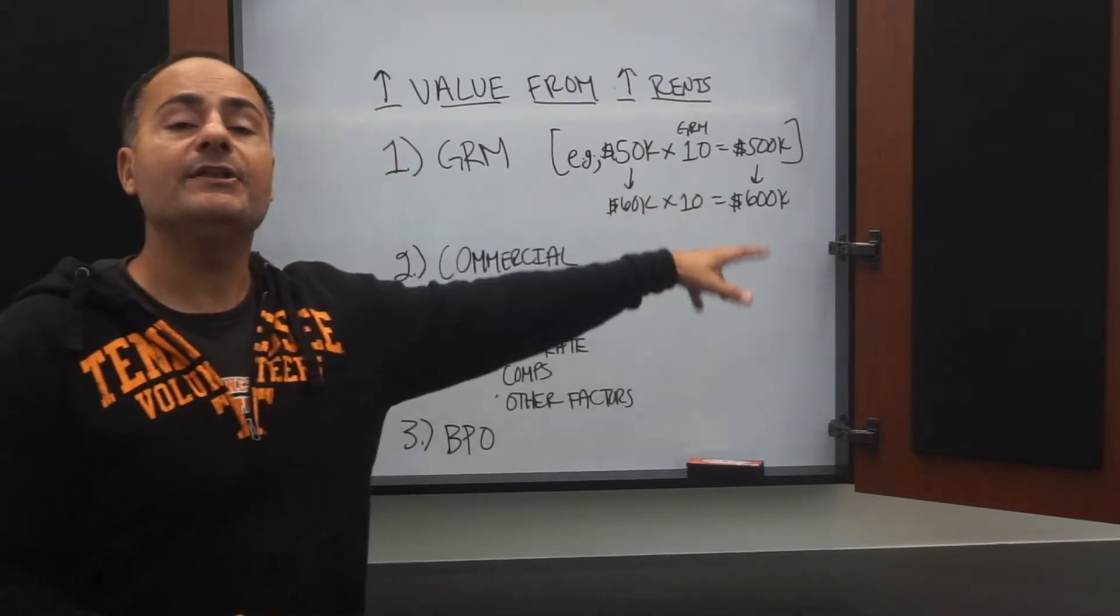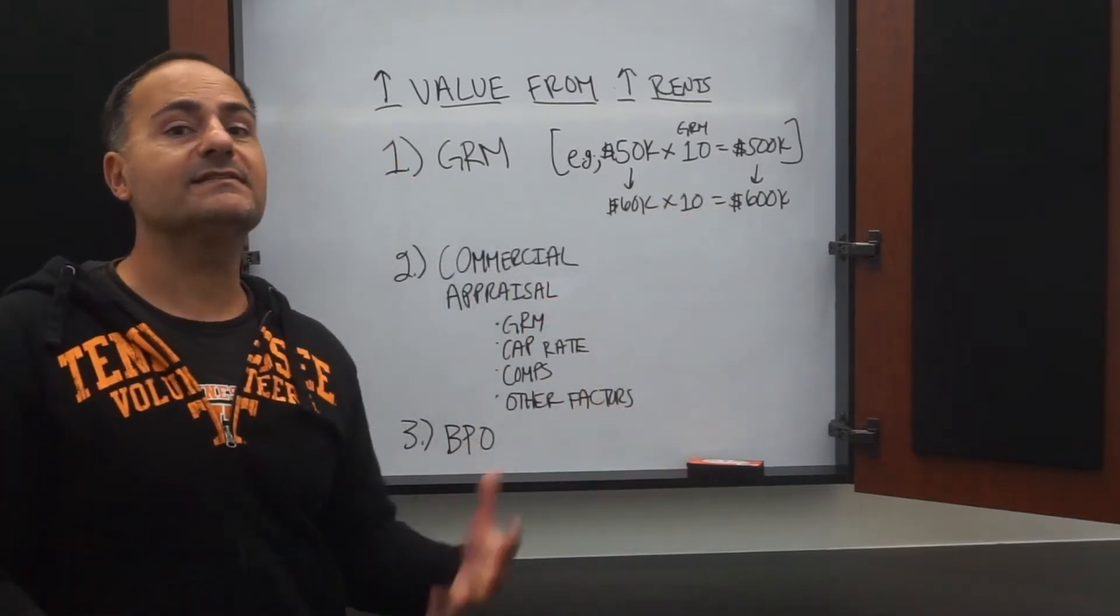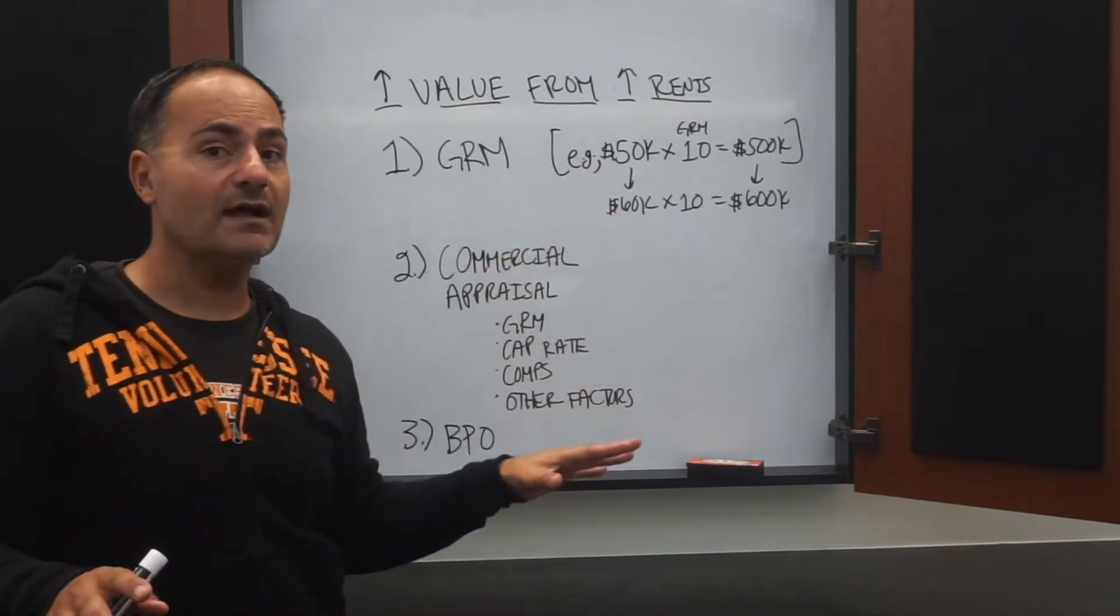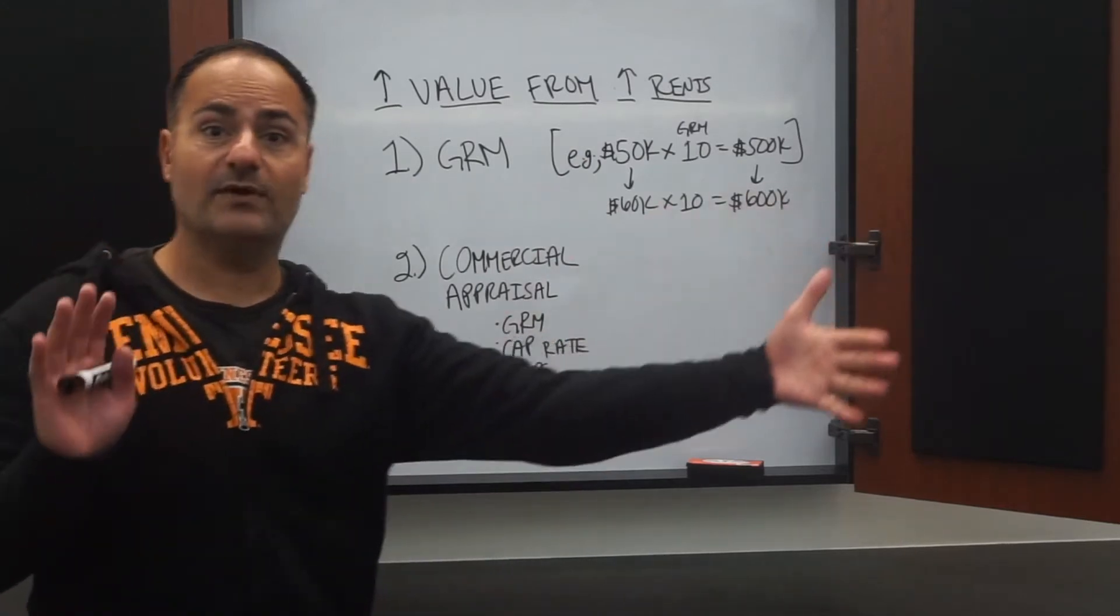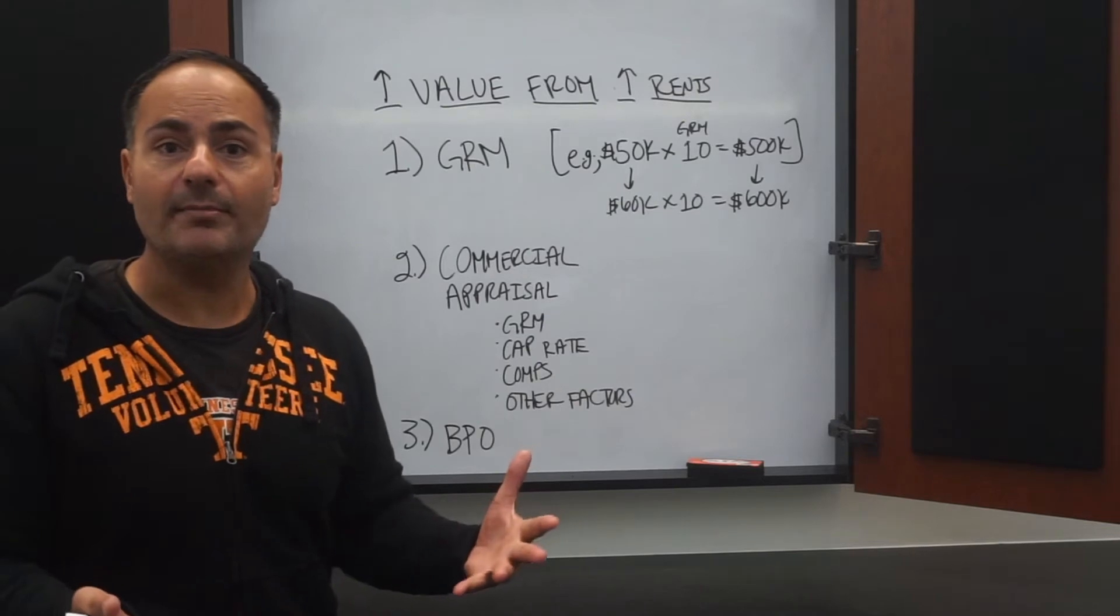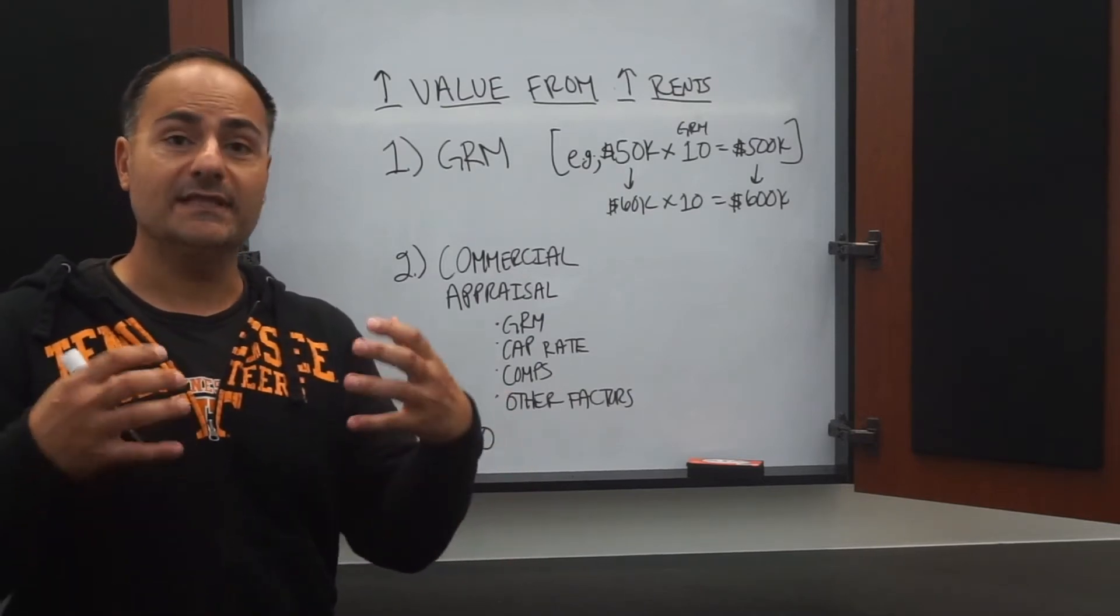So now I've increased my rent to $60,000, my GRM is 10, now my new value for that property is $600,000. So what have I done by increasing my rents just $10,000, which is not unreasonable over a 12-month basis? I've increased $100,000 on my property. That's why landlords want to increase rent all the time.